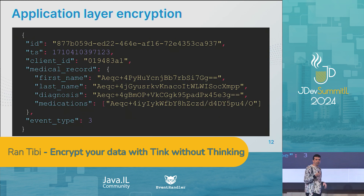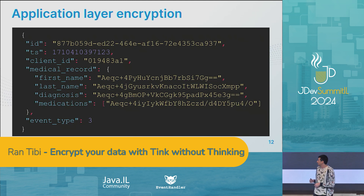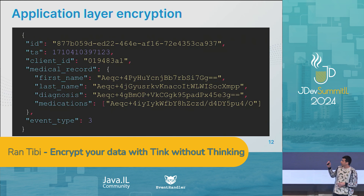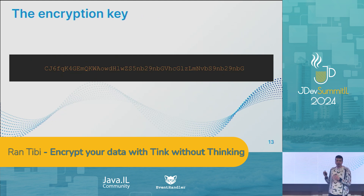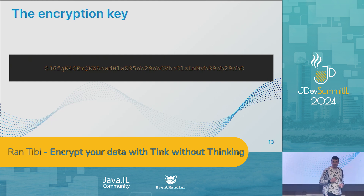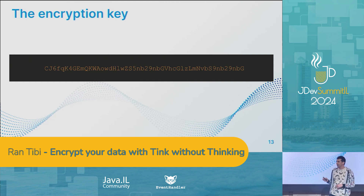We decided to encrypt each medical record — each PII and PHI field — before it was written to disk, and to keep the metadata fields as plain text. But since we use encryption, it means that we have to use an encryption key — a super secret key that encrypts all our data — and we have to share it with everyone that needs to decrypt the data.